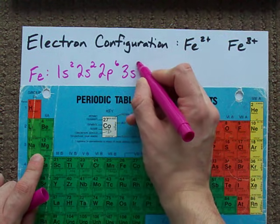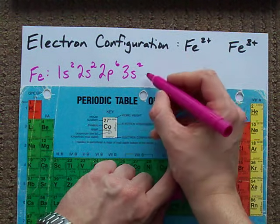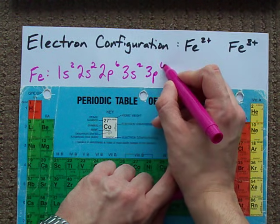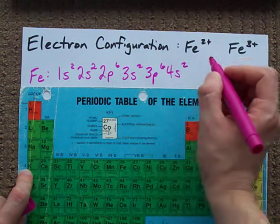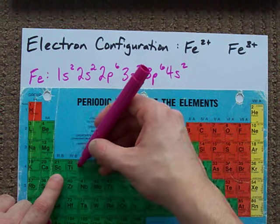We have a 3s2. We have a 3p6. We have a 4s2.